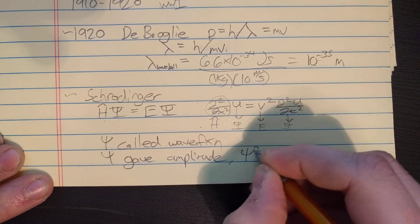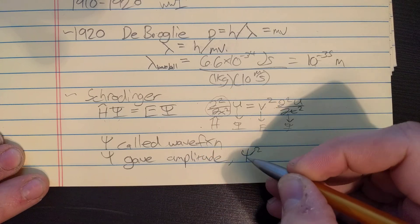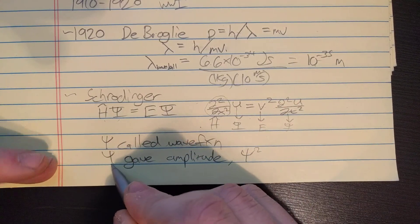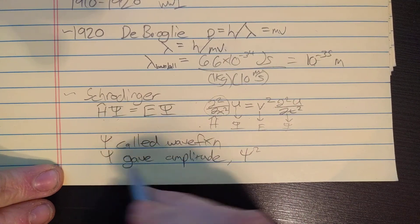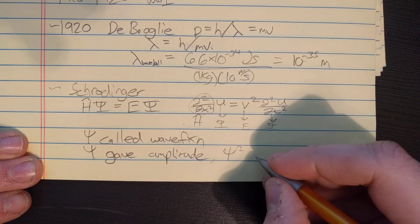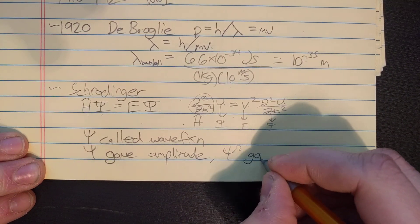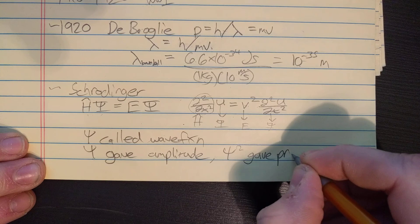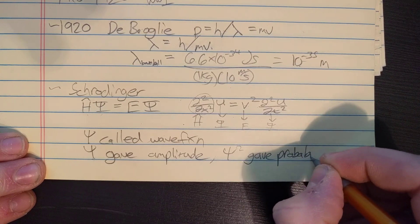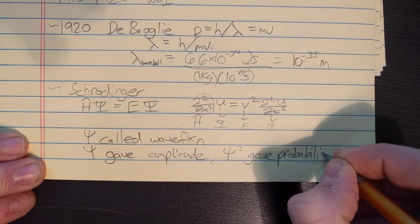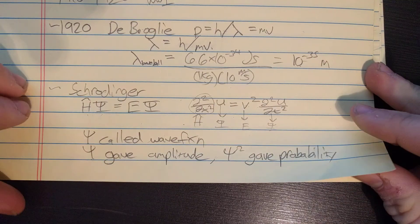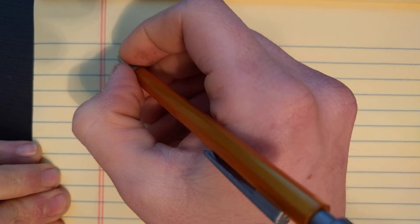Then psi squared, if you squared it, Max Born said, nobody knew what this wave function was, but Max Born came along and said if you square that thing, it gives you the probability of something happening. I'll explain that in later videos more.